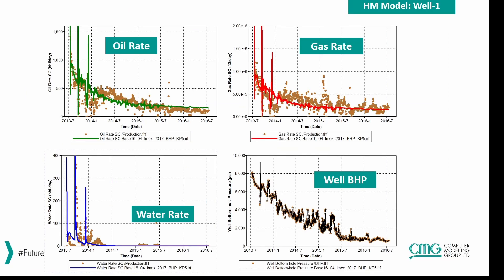This is the history match for the first well. There are two fracture hits that occur, and you can see in the water rate signature and the pressure signature the first fracture hit and then the second — a water spike and a pressure spike at those two locations. The rates and pressure are matching very closely.